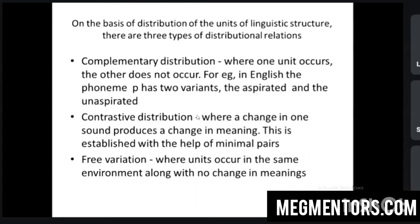These three — complementary distribution, contrastive distribution, and free variation — are the important distributional relations according to Bloomfield. American structuralism focuses on the distributional relationship and the capacity of elements for association and distribution: how they can be combined and how they can be replaced.